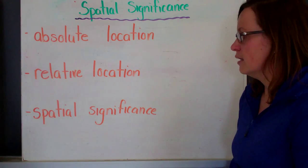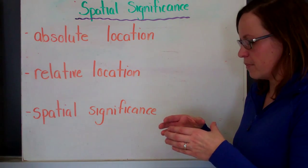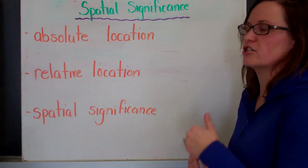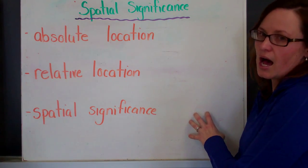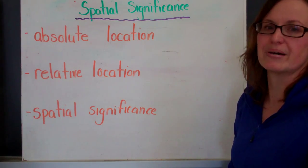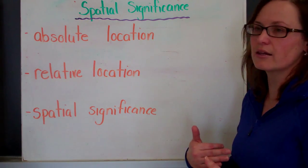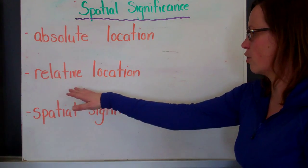Then there's a relative location. This is discussing something's location in relation to something else. So I could say that I am beside the chalkboard or I am beside the camera. That is my location in relation to something else, or relative location.